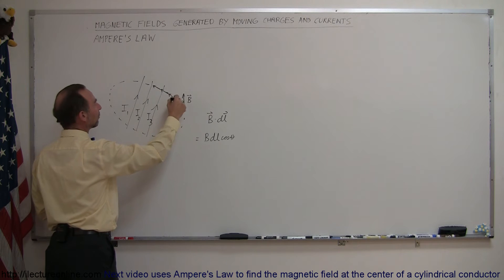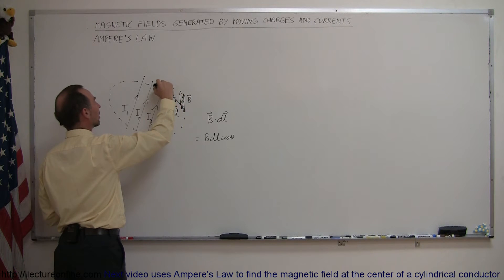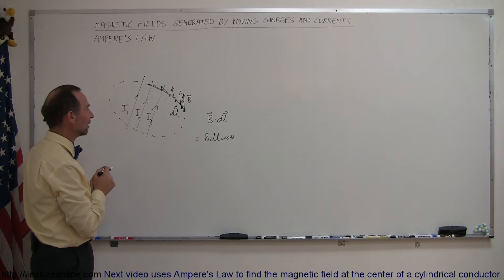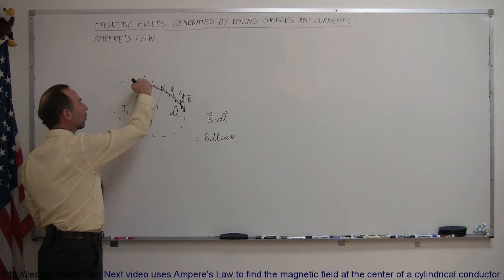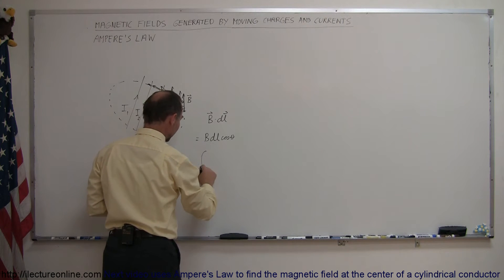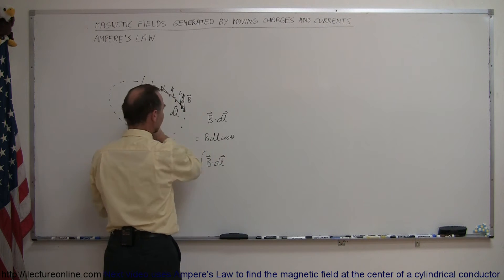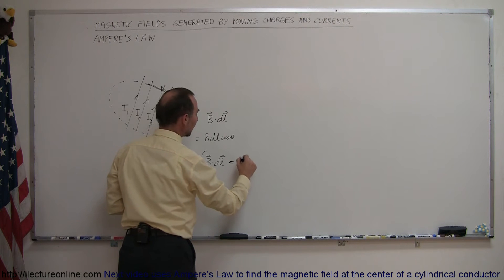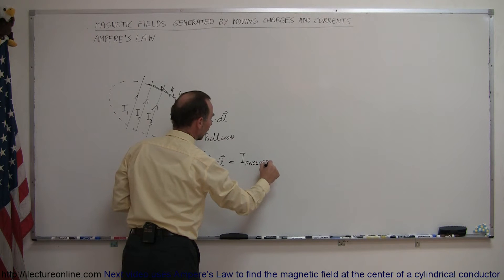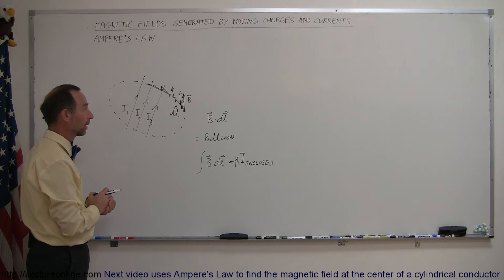...we found the B field in each particular case. Sometimes the B field would be parallel to the line segment dl. If we added up all those products — B dot dl — he figured out that if we summed them all up, and of course summation is an integral sign, if we summed up all the B dot dl's all the way around the circle, that was always equal to the I enclosed multiplied by mu sub naught. And that becomes a very interesting equation.